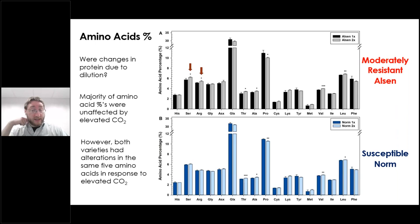However, both varieties had changes in the same five amino acids, with significant changes in phenylalanine, alanine, proline, valine, and leucine — for both the moderately resistant and susceptible Norm variety — suggesting there are some significant metabolic changes occurring in the plant, not completely due to dilution from increased photosynthetic rate. Additionally, the moderately resistant Elsin also had more amino acid ratio changes compared to the susceptible variety, with changes in serine and arginine.